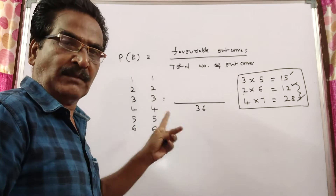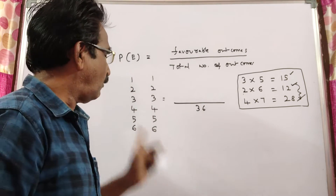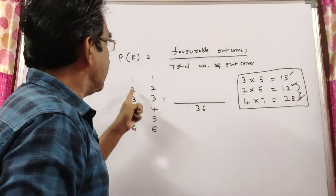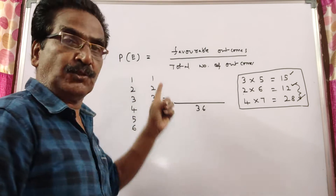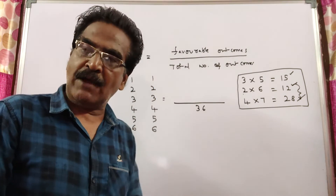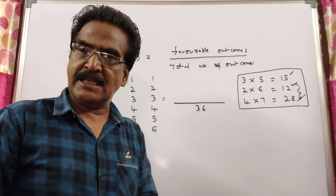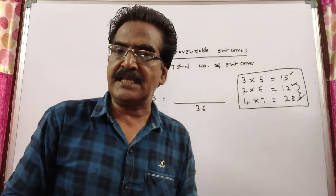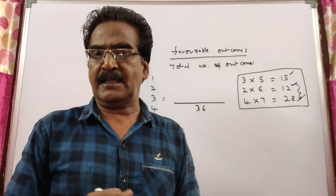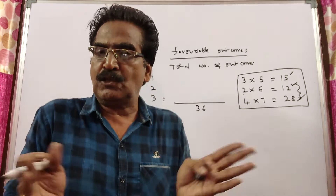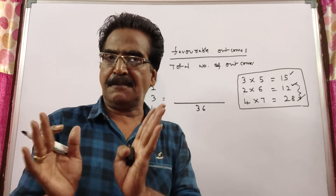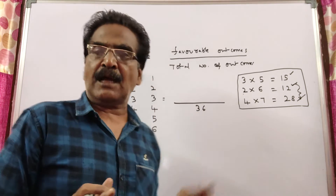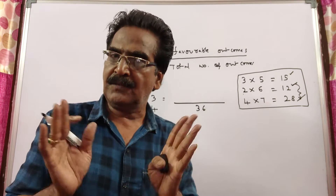The pairs start from one-one, one-two, one-three, one-four, one-five, one-six — six pairs. Again starting with two, you will have another six pairs. In the same way, starting with six, you will have another six pairs. So six into six gives 36 pairs total. Total number of outcomes: 36.